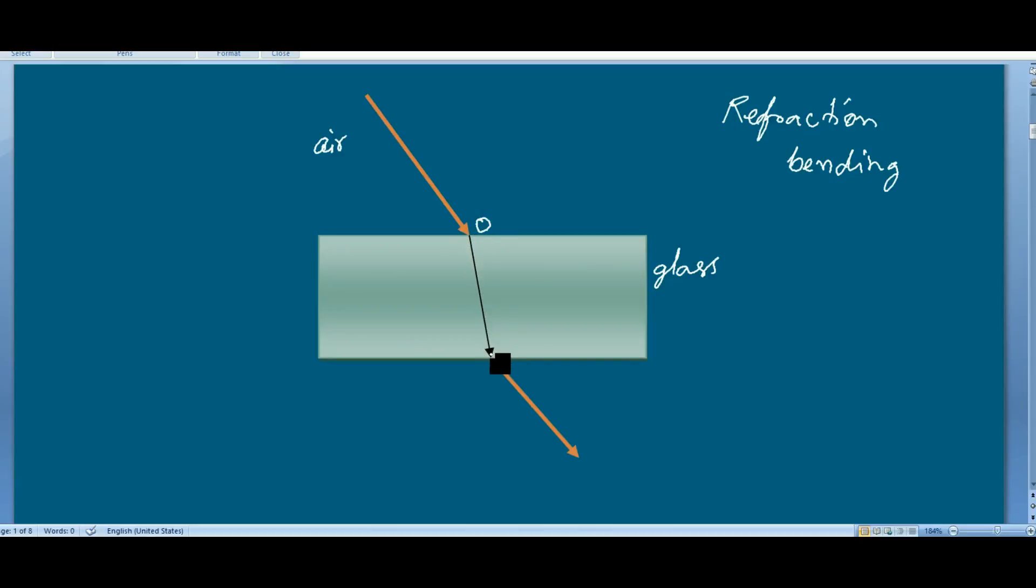And again, when it comes out from the glass to air, it again follows this path. That means at these two junctures—that is, the junction of the two media—it changes its direction. This is called refraction of light.